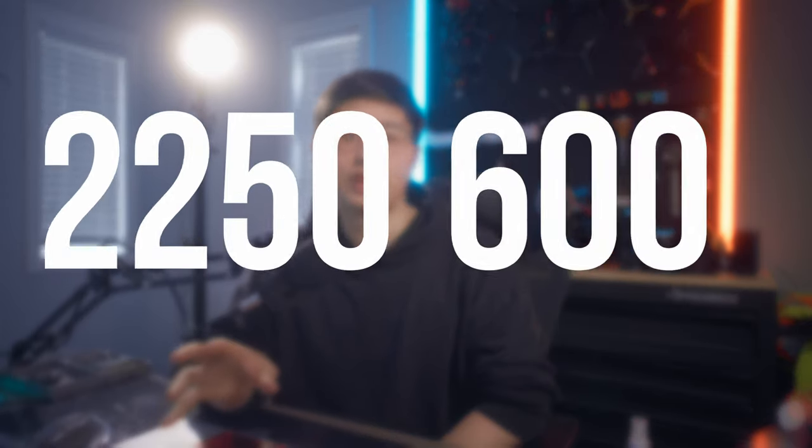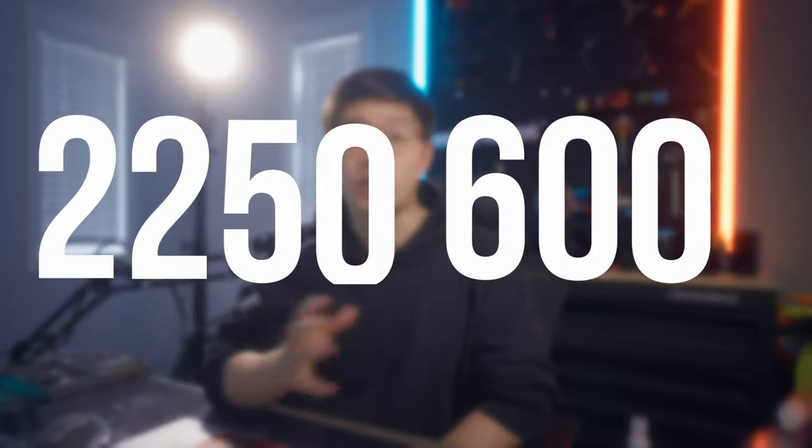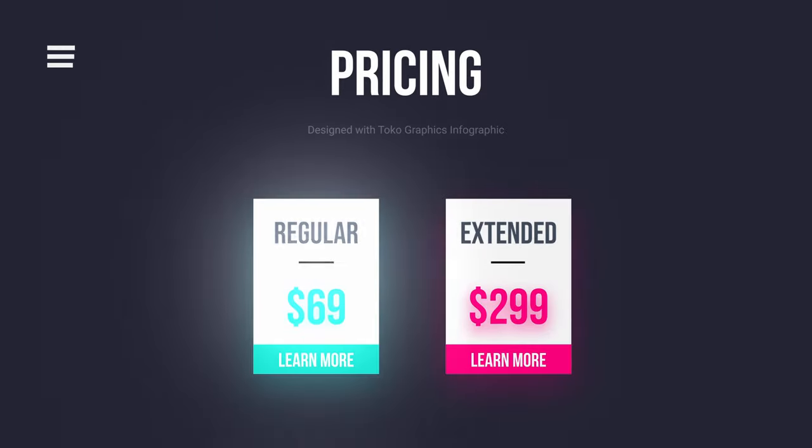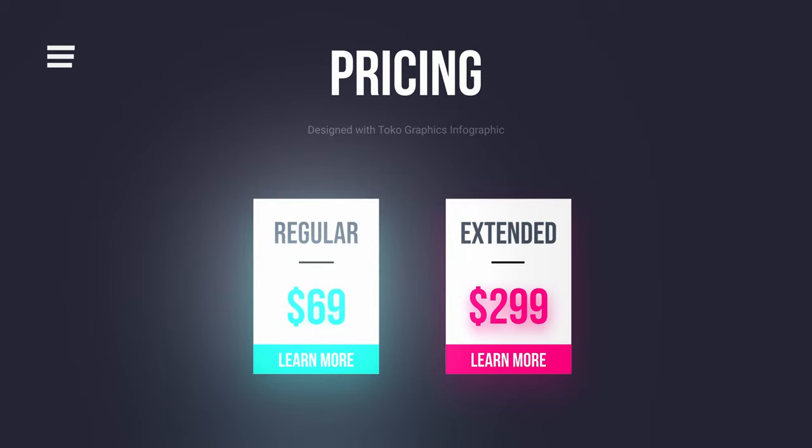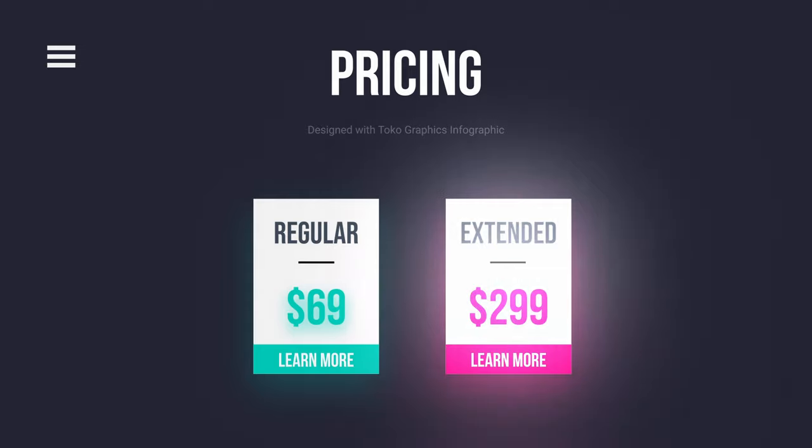If you want to purchase this graphics pack, here's why I think it's such great value. For all 2250 graphic elements and over 600 sound effects, you can purchase the whole pack for a one-time payment of $69, which is pretty insane value — covering everything you'd want to use for Instagram, YouTube, or any other social media. If you want to use it for commercial or client work, the extended license is $299, but that's still great value. A lot of other sites charge an arm and a leg for just a few elements, and you'd have to buy multiple packs to get close to 2000 elements, or pay a monthly subscription that very quickly adds up to over $299.